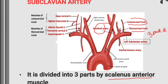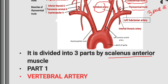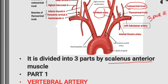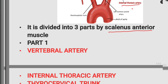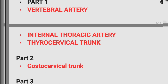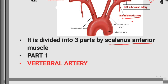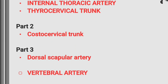From part two of the subclavian artery, we get the costocervical trunk. So the branches from part one are: vertebral artery, internal thoracic artery, and thyrocervical trunk. The costocervical trunk is from part two, and the dorsal scapular artery is from part three.